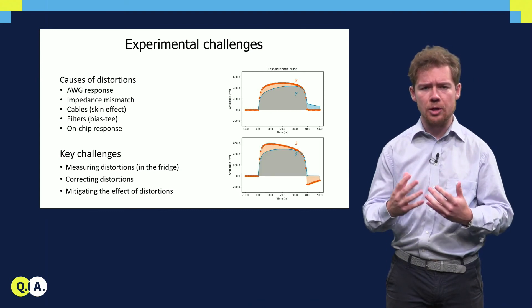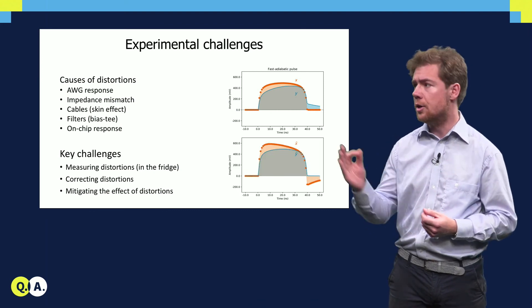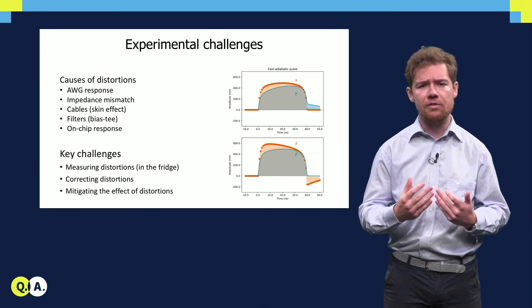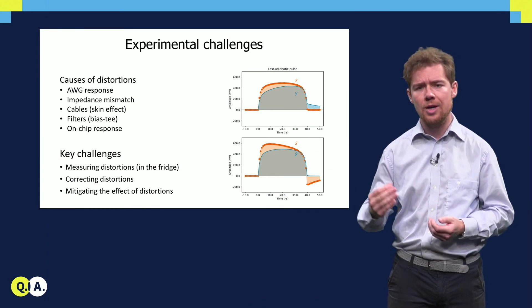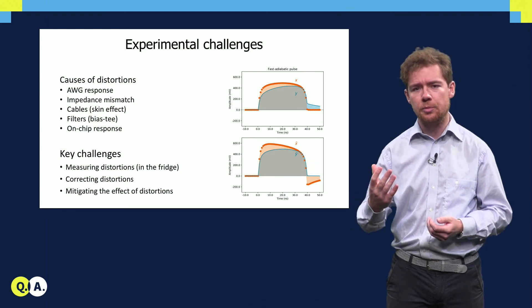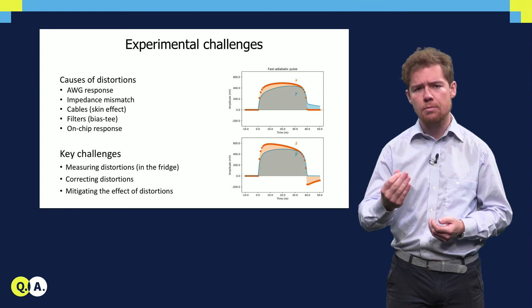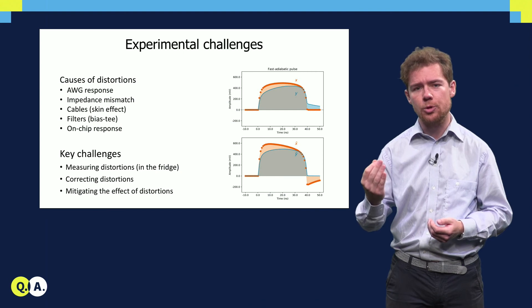These effects are typically corrected by pre-distorting the waveform X with a filter designed to invert the distortions, turning it into X-tilde, so that the qubit experiences not the pulse Y, but the Y-tilde that is equal to the intended waveform.